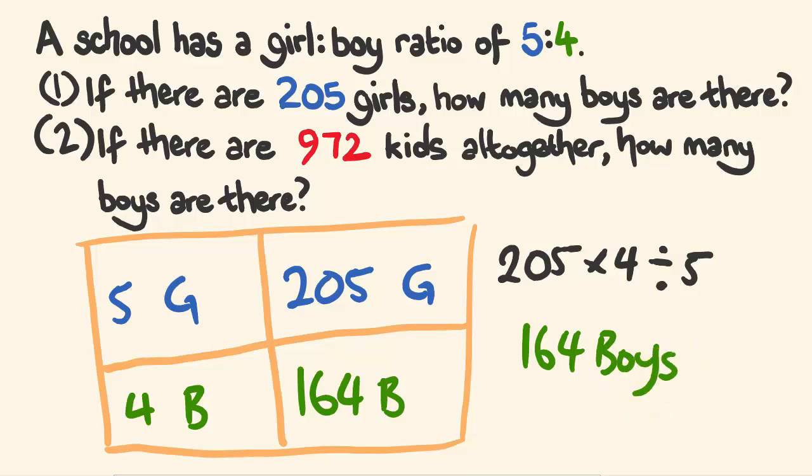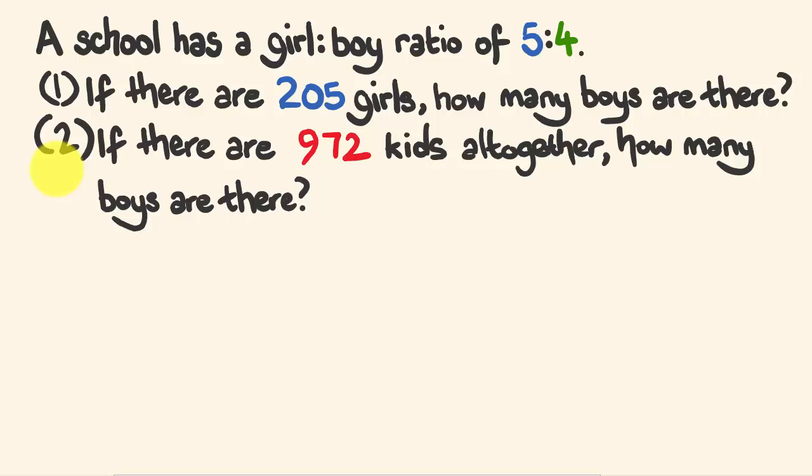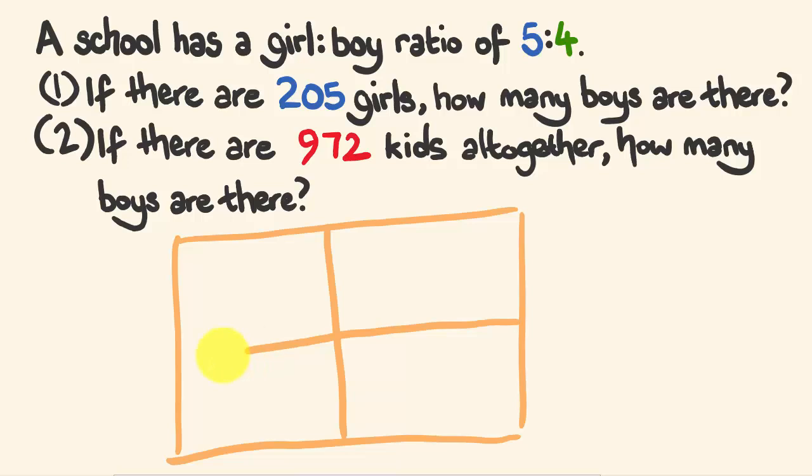Alright, what about part 2 here? Okay, if there are 972 kids all together, how many boys are there? So I'm going to draw up my box once again. And what I'm going to do is just a slight tweak now. And that's this. We're looking at how many boys there are. So how many boys are there? There's 4 boys. And this is out of what we're looking at, 5 to 4. This adds up to 9 all together. This is for every 9 kids.